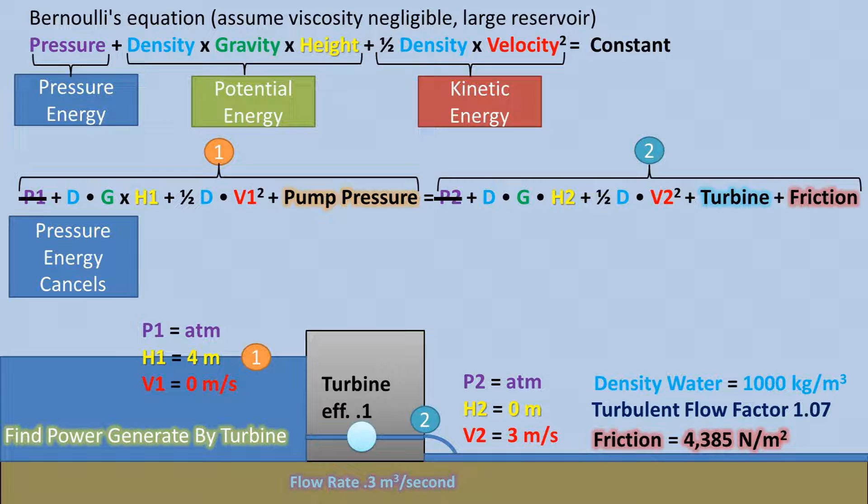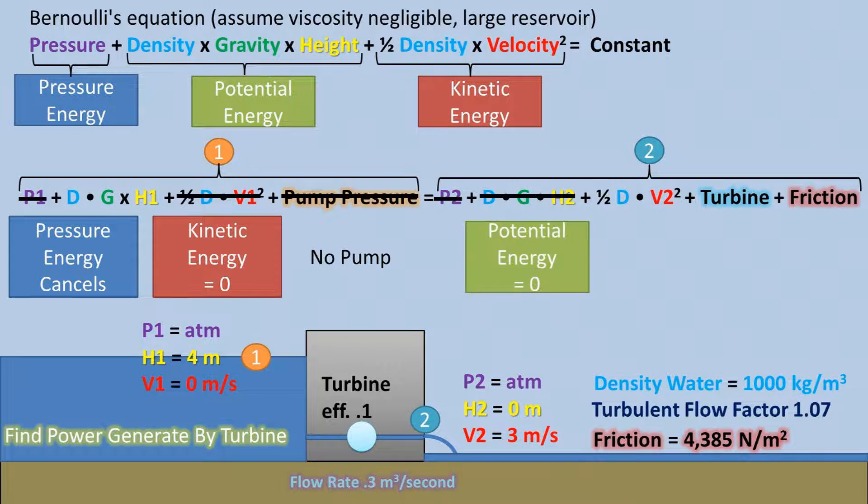So, looking at this problem, pressure is atmospheric on both sides, so the pressure portion of the Bernoulli equation gets cancelled out and removed. At point 1, we assume a large reservoir, so the velocity is basically zero, and this portion can also be set to zero and removed. There is no pump in this problem, so this can also be removed. We set the height at point 2 at 0, relatively speaking, so we can set the potential energy at 0 at this point and remove it as well.